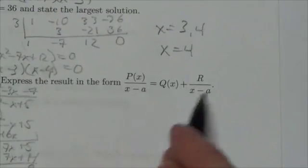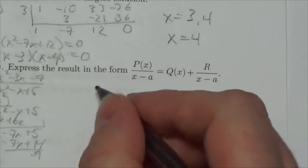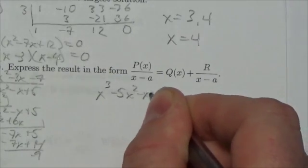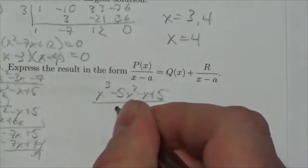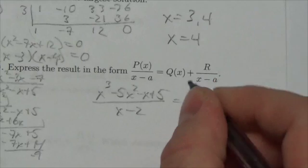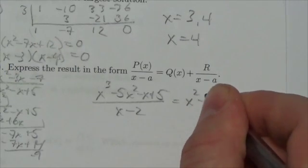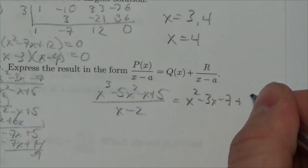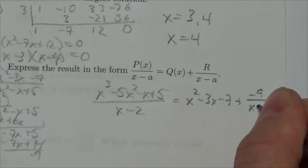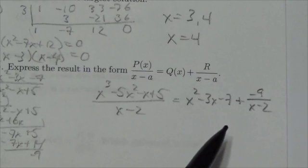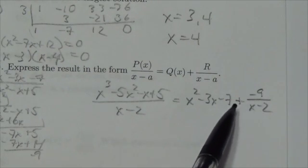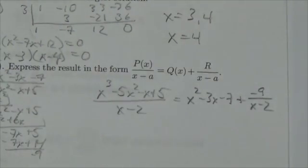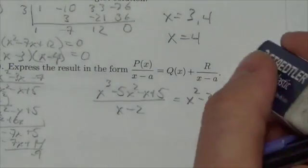So to write my answer in this form: (x cubed minus 5x squared minus x plus 5) over (x minus 2) equals x squared minus 3x minus 7, plus negative 9 over (x minus 2).